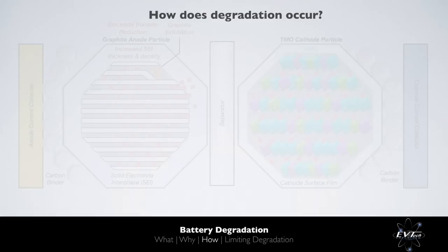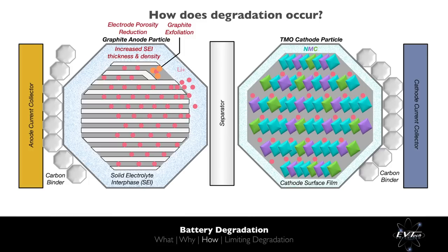Let's begin by looking at anode degradation. A major factor in the degradation of lithium-ion cells containing graphite anodes, which is the vast majority of lithium-ion cells, is the solid electrolyte interphase. The solid electrolyte interphase, or SEI for short, is a stabilizing, passivating porous layer which forms on the surface of the graphite anode upon exposure to the electrolyte with which it is unstable.